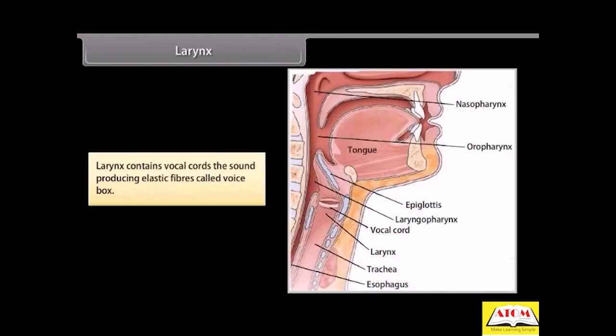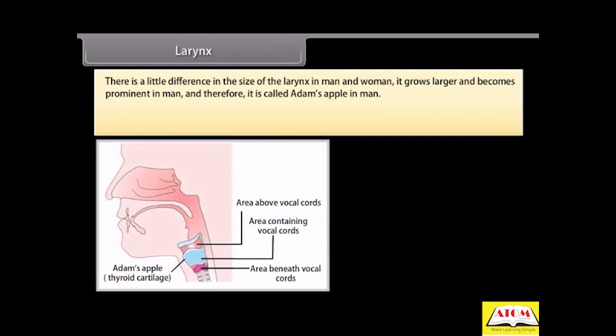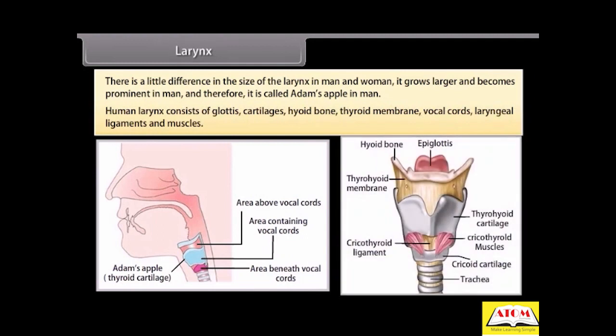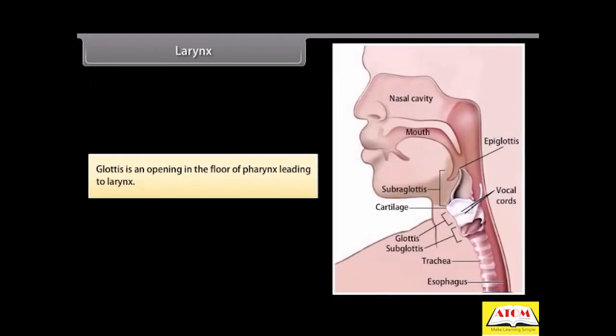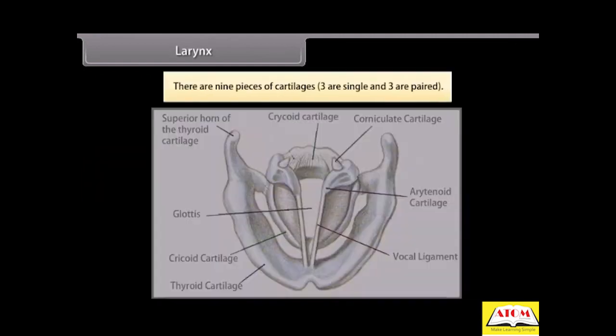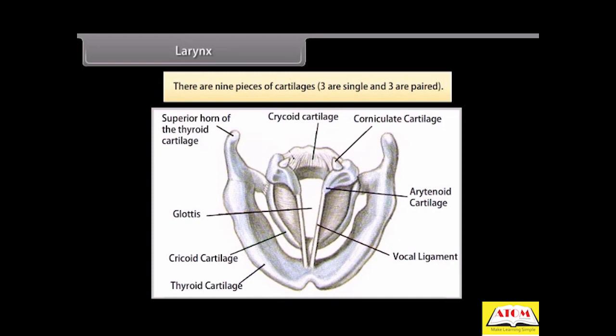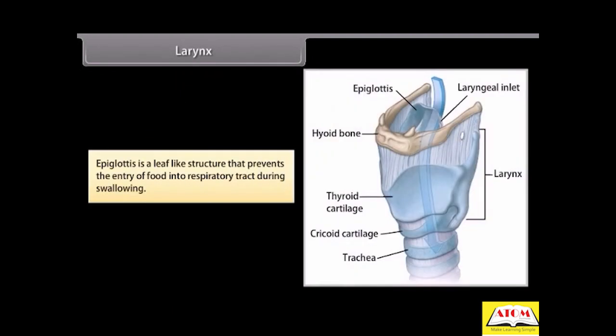Larynx. Larynx contains vocal cords, the sound-producing elastic fibers called voice box. There is a little difference in the size of the larynx in man and woman. It grows larger and becomes prominent in man, and therefore it is called Adam's apple in man. Human larynx consists of glottis, cartilages, hyoid bone, thyroid membrane, vocal cords, laryngeal ligaments, and muscles. Glottis is an opening in the floor of pharynx leading to larynx. There are nine pieces of cartilages: three are single and three are paired. Epiglottis is a leaf-like structure that prevents the entry of food into respiratory tract during swallowing.